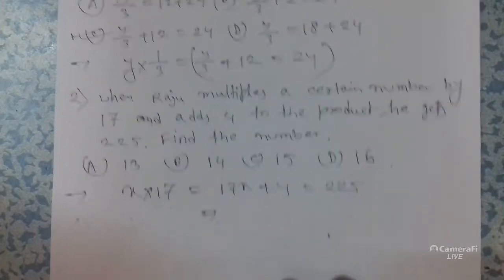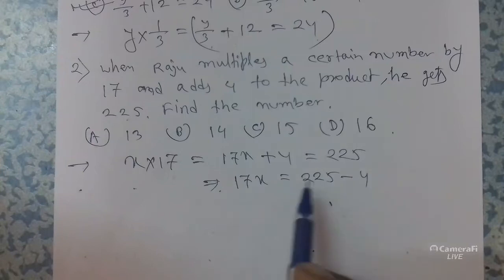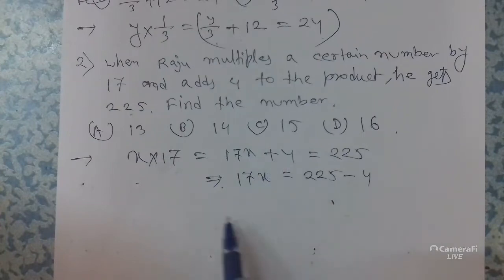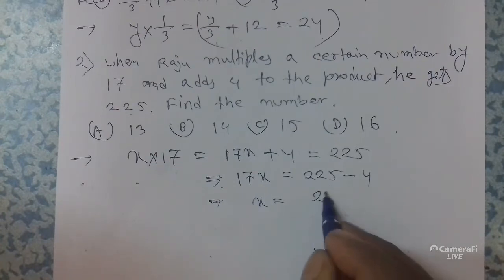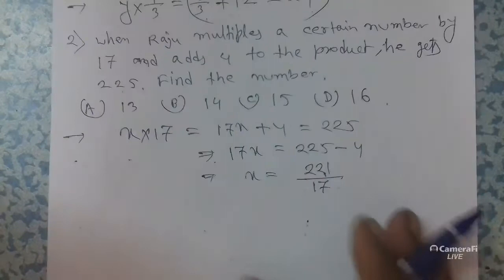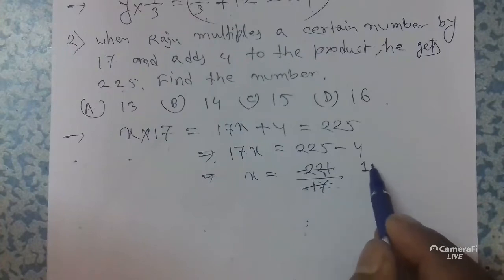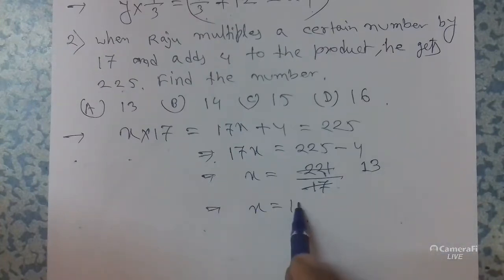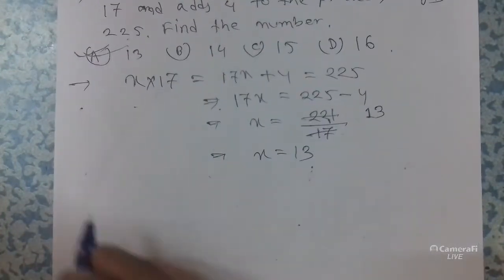Now we have to find the value of x. So 17x = 225 minus 4. When we transfer 4 to the right hand side, the sign changes to minus. So 17x = 221. Dividing 221 by 17 gives 13. So x = 13, and the correct option is A.